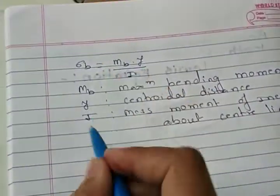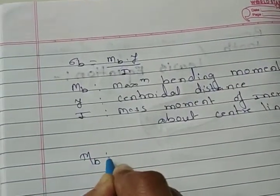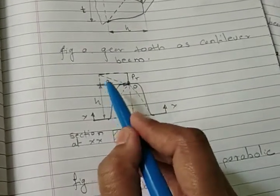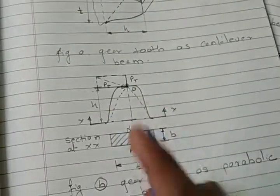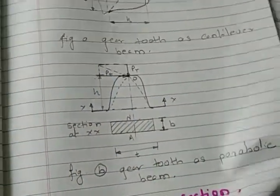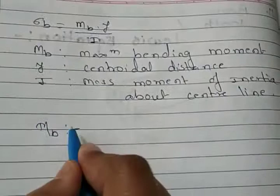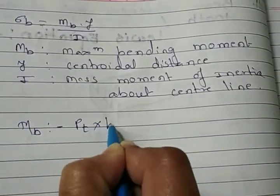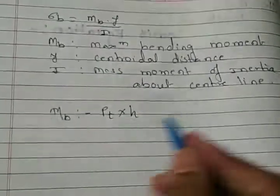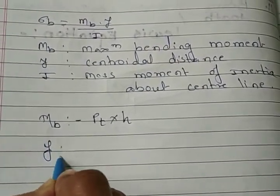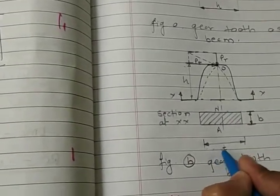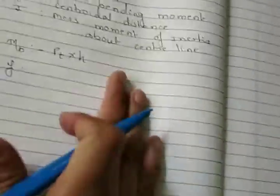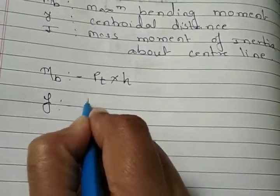So firstly is mb that is maximum bending moment. So maximum bending moment is due to this tangential force and this perpendicular distance. So it is pt into h. Then centroidal distance is y. So that centroidal distance is this thickness divided by 2. So y is equal to t divided by 2.